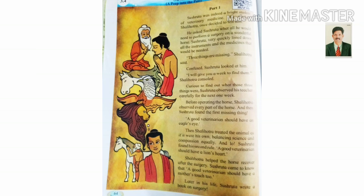Confused, Sushruta looked at him. 'I will give you a week to find them,' Shalihotra consoled. Curious to find out what those three things were, Sushruta observed his teacher carefully for the next one week.